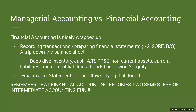Financial accounting is really nicely wrapped up. You start by recording transactions, then prepare those financial statements: an income statement, a statement of retained earnings, and a balance sheet. Then we take a trip down the balance sheet — inventory, cash, receivables, property, plant and equipment, non-current assets, current liabilities, non-current liabilities, bonds, and owner's equity. A final exam is generally going to be a statement of cash flows, and it really ties everything nicely together.